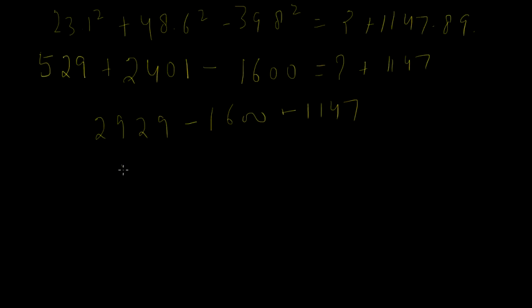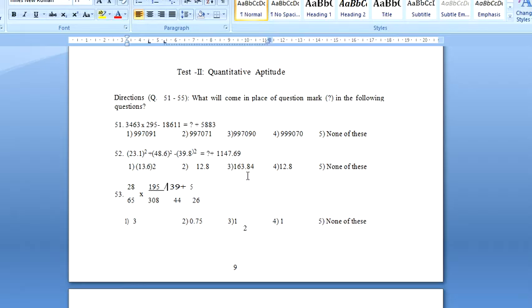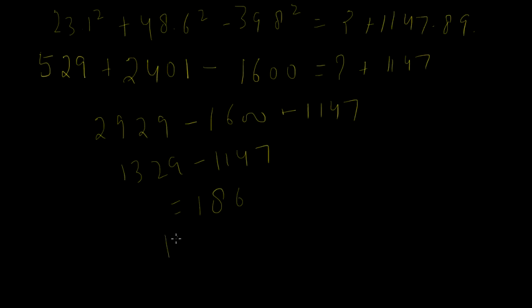If we solve this, we get 1329 minus 1147 which is approximately 186. But we check the options, there are a couple of options nearby. One is 13.6 whole square and one is 13.8. To get the correct option we will check the last digit. The last digit would be 1 here, 6 here, 8 square is 4 here. So 1 and 6 is 7, this is 4 and this is 9. So 9 and 4 adds up to make 13, so the last digit is 3 and the last digit here is 7. 7 minus 3 gives us 4, so the right answer would be 163.84.